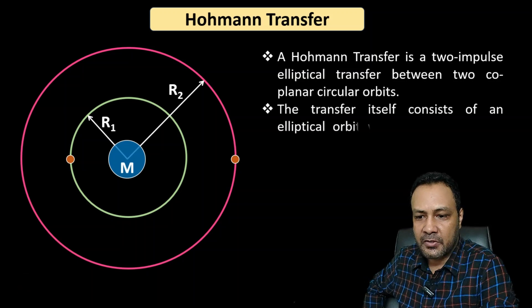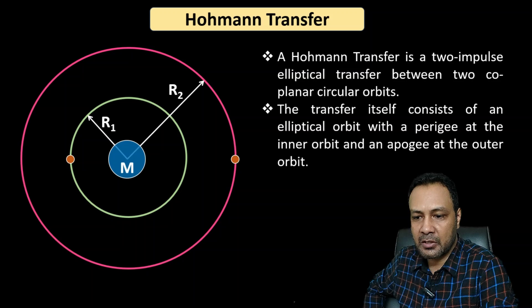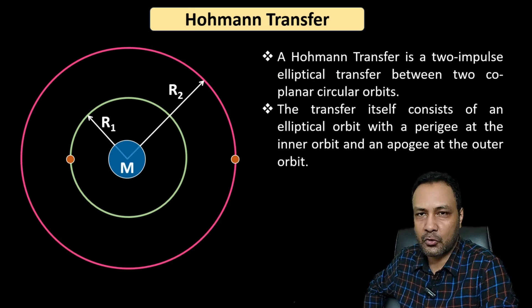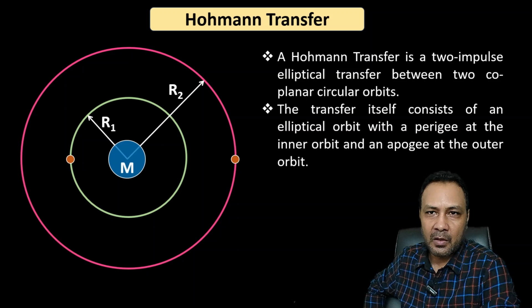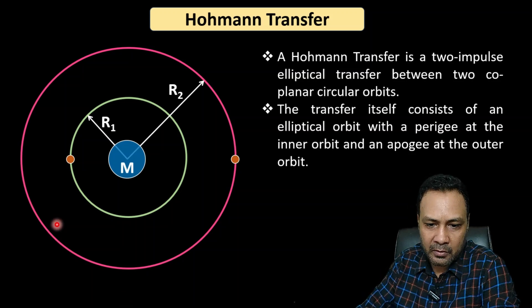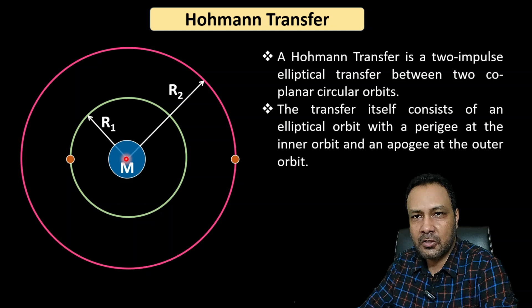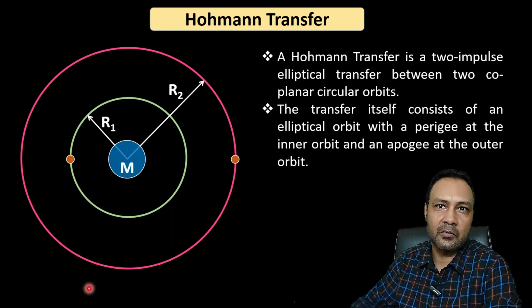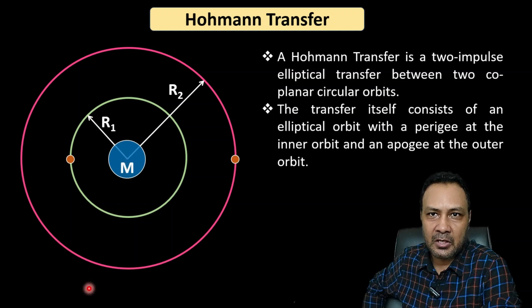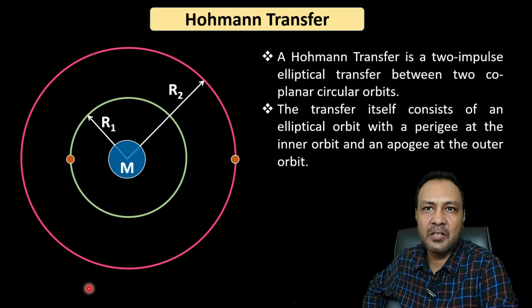The transfer itself consists of an elliptical orbit with a perigee at the inner orbit and apogee at the outer orbit. The assumption here is that the only force acting on the satellite is the gravitational force of the parent planet, and the velocity imparted to the satellite is instantaneous.